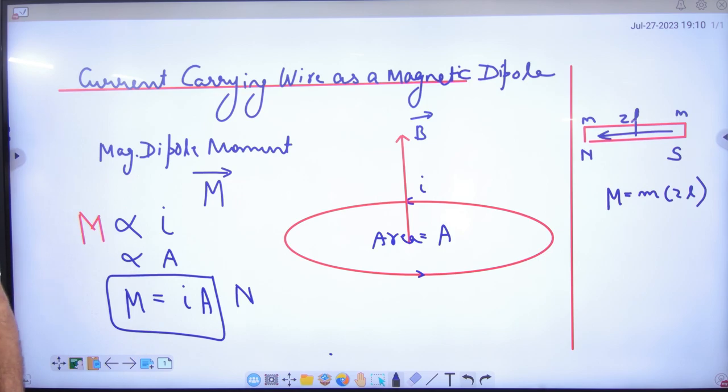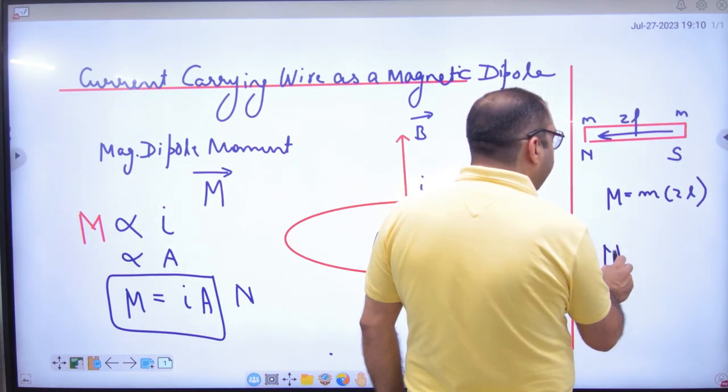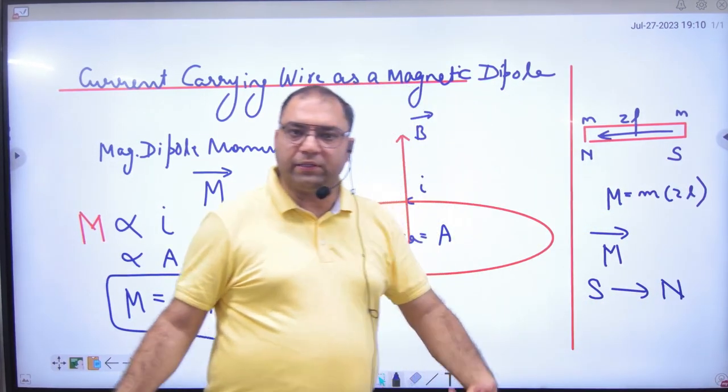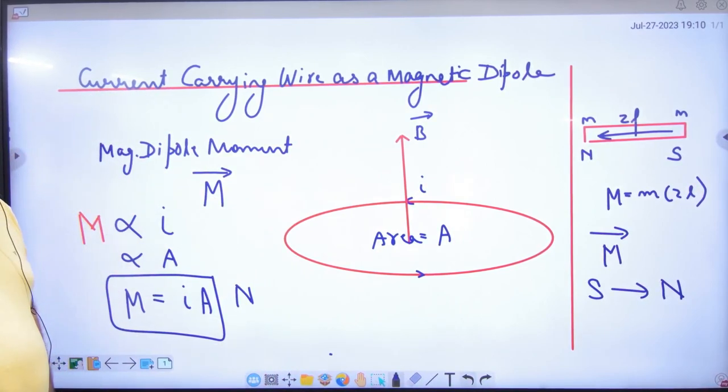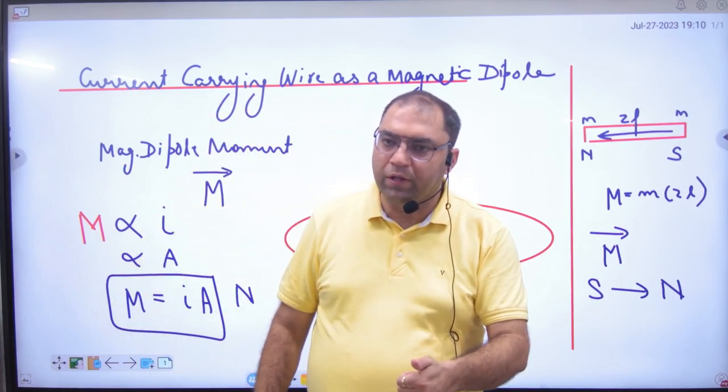And note one more thing: Capital M is a vector quantity. Someone will ask me, the direction of capital M—where? South to north. This is very important.